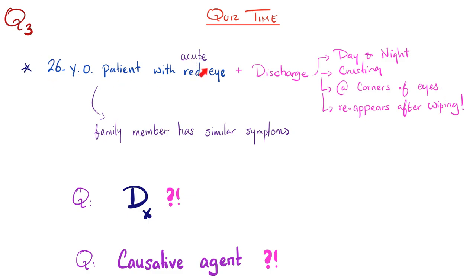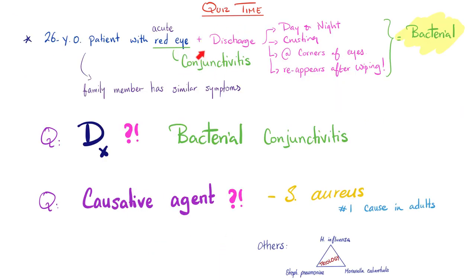We have a 26-year-old patient with acute red eye and discharge from the eye. The discharge happens every day and night, with crusting especially at the corners of the eye. When you wipe it out, it comes back again. Family members had similar symptoms. The diagnosis is conjunctivitis. The key question is: is it bacterial or viral? Discharge day and night, crusting at the corners that reappears — this is bacterial, hands down. The causative agent is staph aureus because this is an adult with these symptoms and family members were affected. Other causes include the famous trinity: Haemophilus influenzae, Strep pneumoniae, and Moraxella catarrhalis.